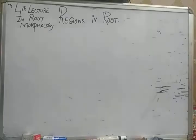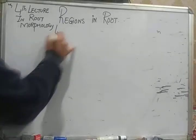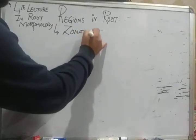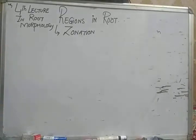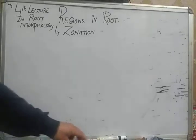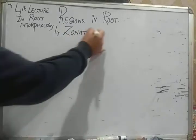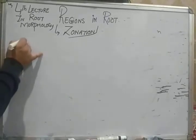I need you to properly concentrate over here. Mere bachon, jab aap regions of root ki baat karte hain, is chauthi lecture mein hum baat karenge regions of roots ki. Jab hum regions of root ki baat karte hain, in some books it is written as zonation. Zonation ka matlab hai ki there are different regions or different zones which are present in a typical root.